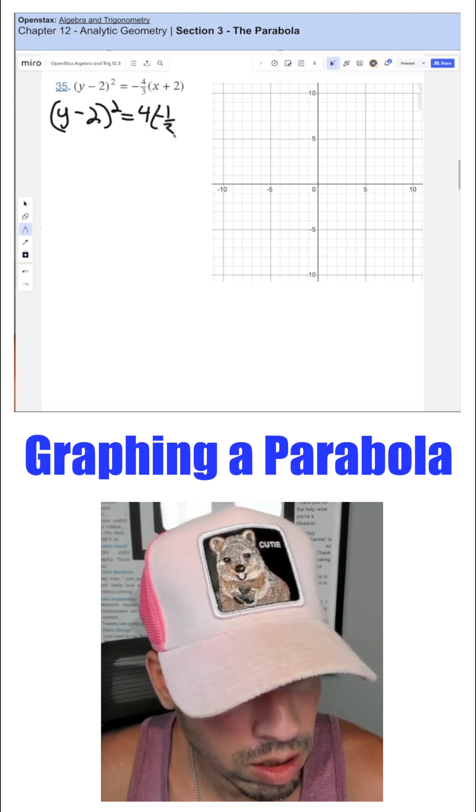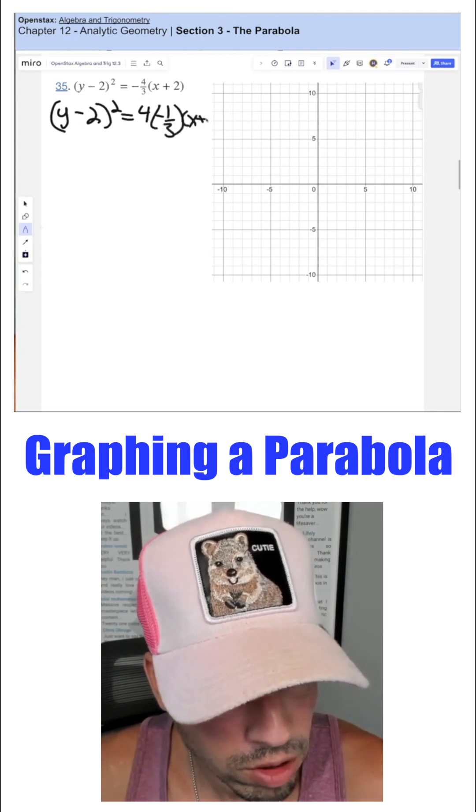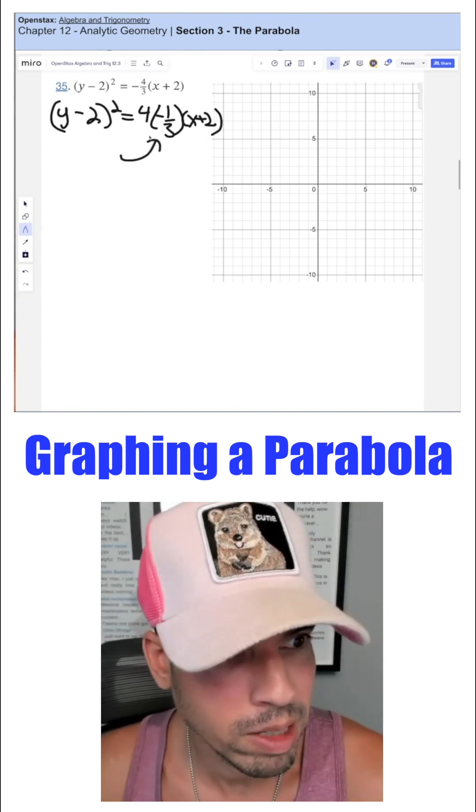Dividing that by four, we get negative one third, and then x plus two. Okay, that's just going to help me so we can see a nice clear p value.